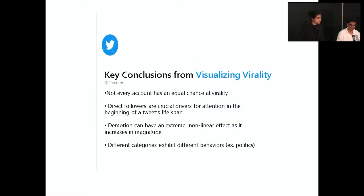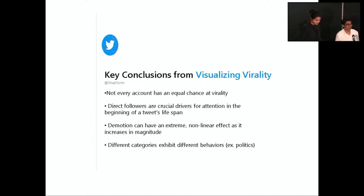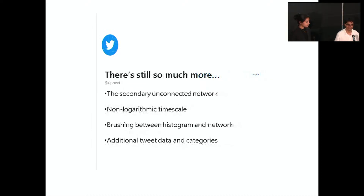Looking at demotion itself and how Twitter manipulates feeds, we found that demotion can have an extreme non-linear relationship on how many engagements a tweet racks up. Looking at tweets within the news, sports, and entertainment categories, we found many different relationships that emerge from being part of certain categories. We hope to make this visualization public early next week and really hope you'll check it out. Thank you so much for attending.